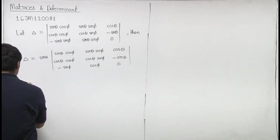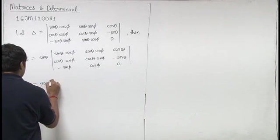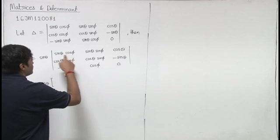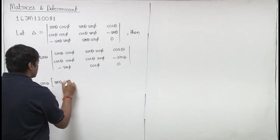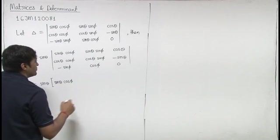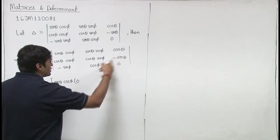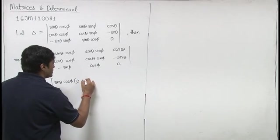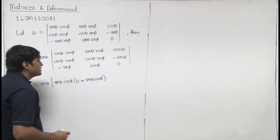We have delta equal to sin theta into. We have to expand with respect to r1. So, we have sin theta cos phi into. This is two k multiply karenge, 0. And minus minus plus ho jayega sin theta cos phi.